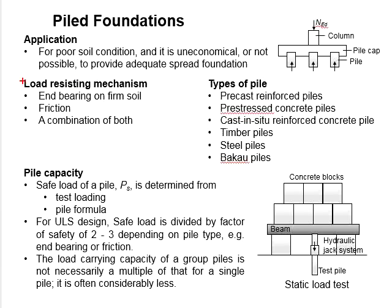Another type of load-resistant mechanism is based on friction. This friction refers to the friction between the soil and the piles. With adequate length of the piles, frictional force is generated on the contact surface area between the piles and the soil, and this generates resistance to the load acting on the pile foundations.